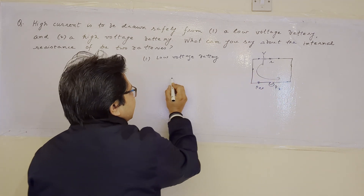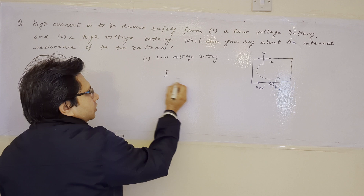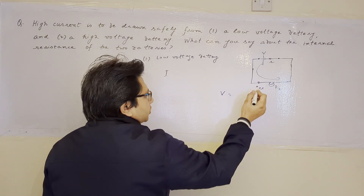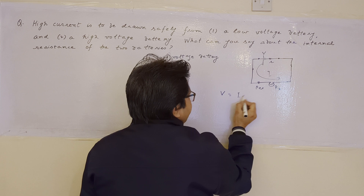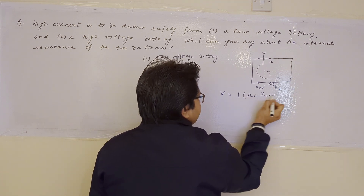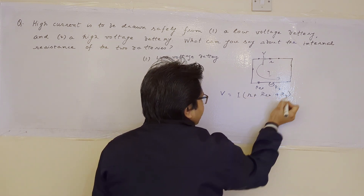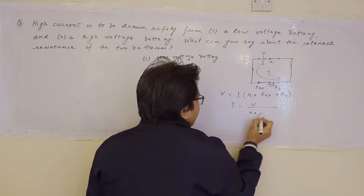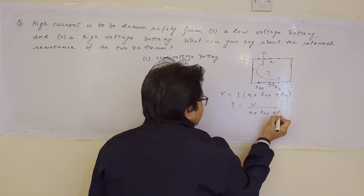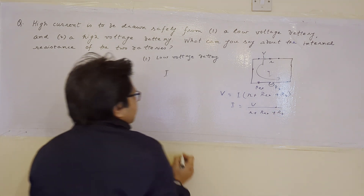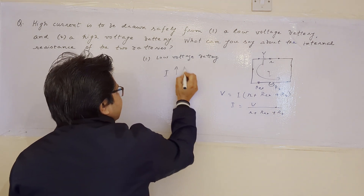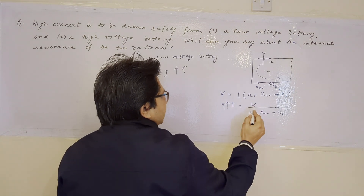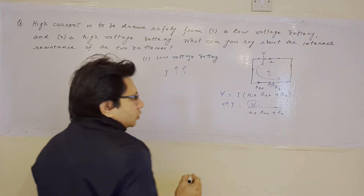The current will flow and we have to maximize it. From Ohm's law, V = I × (r + R_external + R_bulb), so I = V / (r + R_external + R_bulb). This is our expression for current.